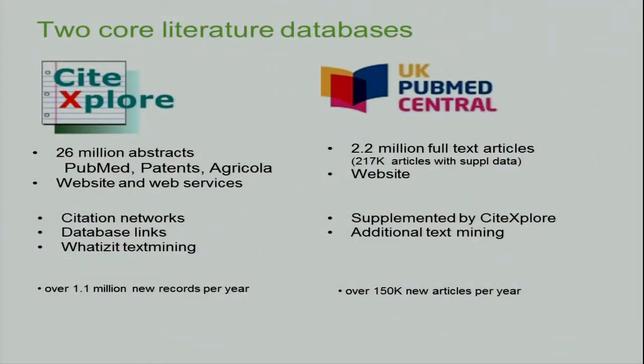UK PubMed Central is a more recent addition — a full-text database, not just abstracts. It includes scanned OCR content for older material, some PDFs, and the majority of newer content in XML according to the NLM DTD, which is public and now widely adopted by publishers. The UK PubMed Central website is supplemented by all the abstracts in SiteExplore, so you can search all abstracts and all full text. It grows at about 150,000 articles a year.